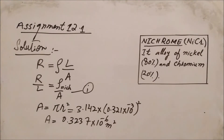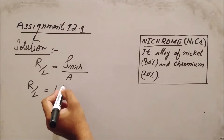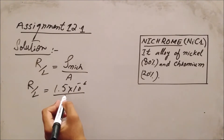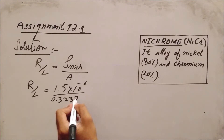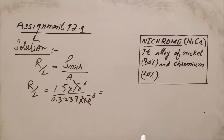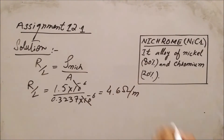Now putting this value into equation number 1: the resistivity of nichrome is 1.5×10⁻⁶ and the area is 0.3237×10⁻⁶. Cancelling the exponents, we get the answer 4.6 ohm per meter. This is the required answer for section number 1.